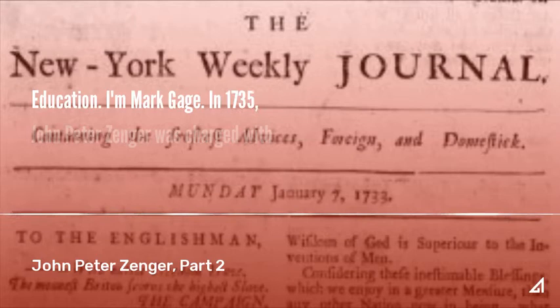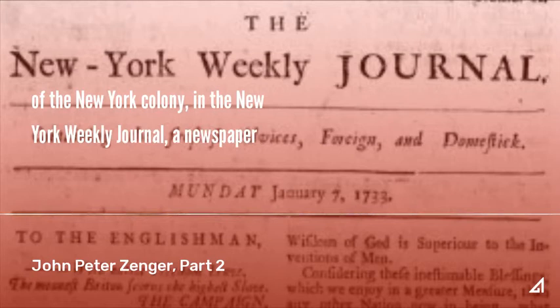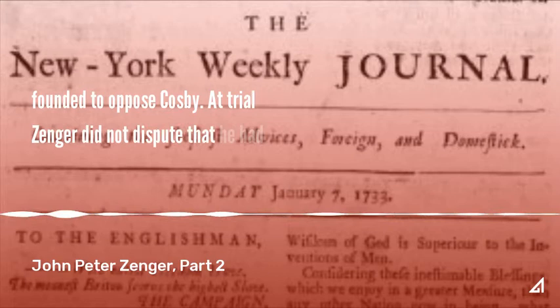In 1735, John Peter Zenger was charged with printing seditious libels of William Cosby, the highly unpopular governor of the New York colony, in the New York Weekly Journal, a newspaper founded to oppose Cosby.